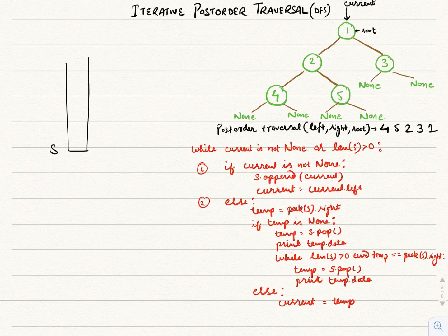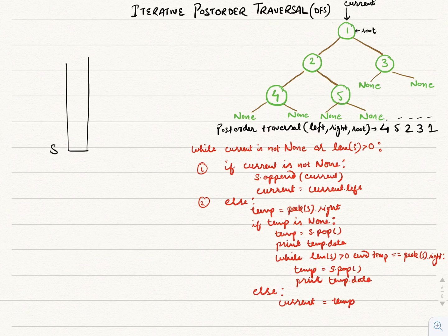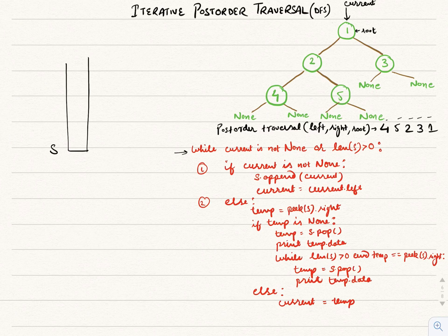Let us now understand the iterative post-order traversal. The post-order traversal for the given binary tree is 4, 5, 2, 3, and 1. We achieve that by first visiting the left node, then the right node, and then the root for all nodes recursively. Now let's see how to achieve it iteratively by following specific conditions.